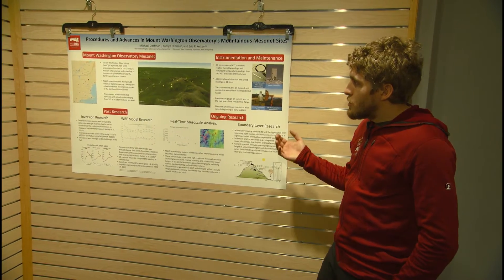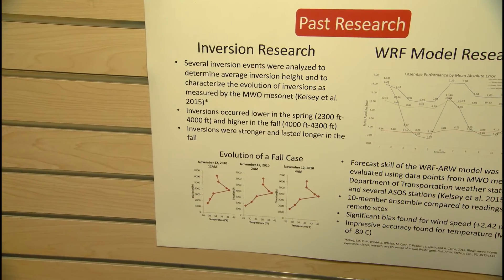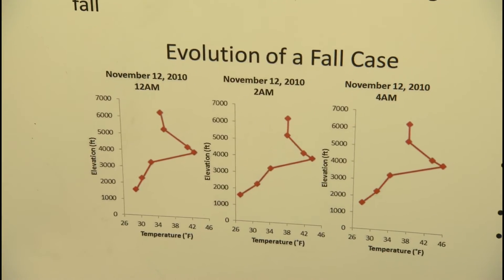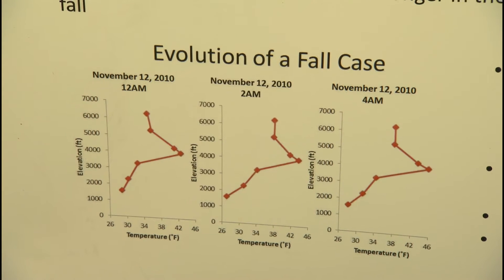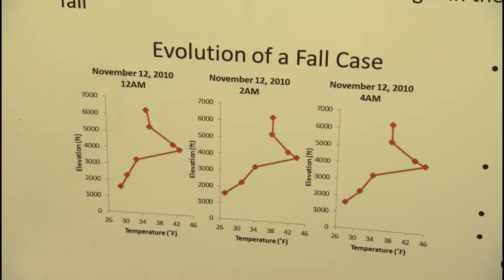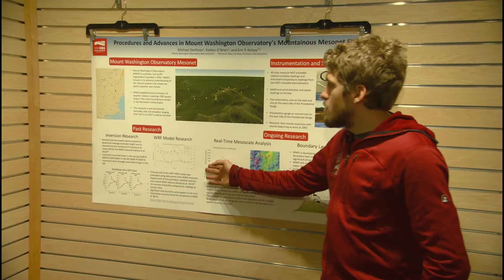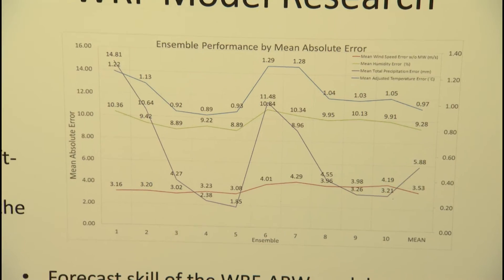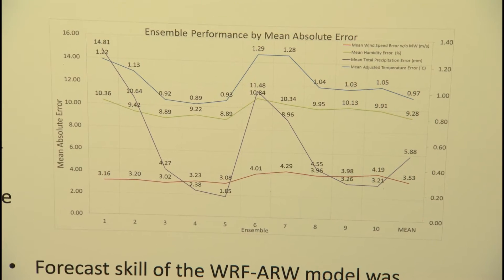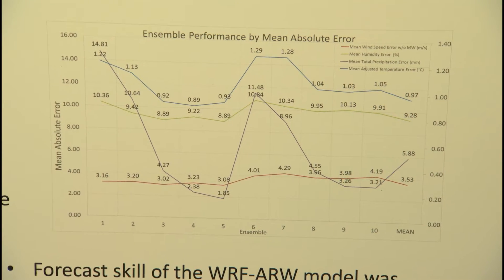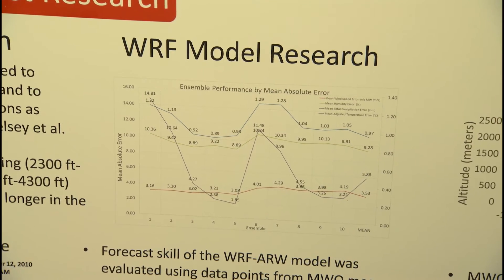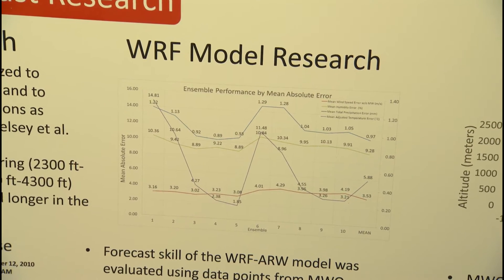Some of the research that we've done in the past is on inversions. Because we have such varying height between our sites, we can look at how the temperature changes with height in the atmosphere, and that's what that project studied. We've also done some verification of high-resolution model output — a student ran a very high-resolution model and then compared the output to what the sites were reading for that time period, and saw how accurate that model was.